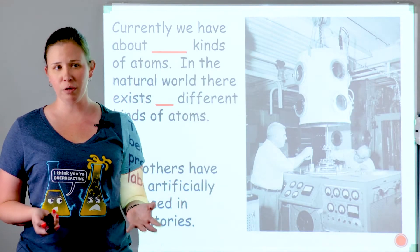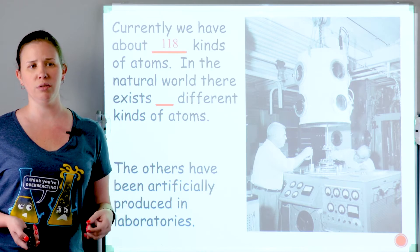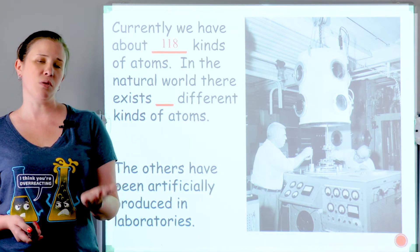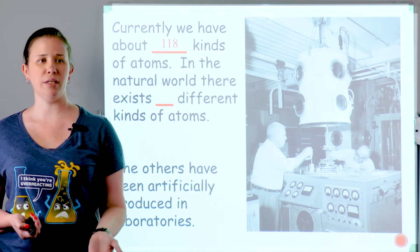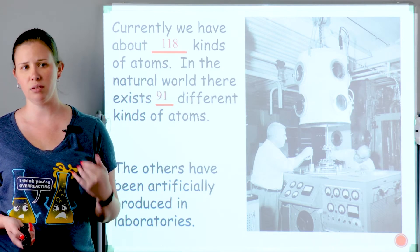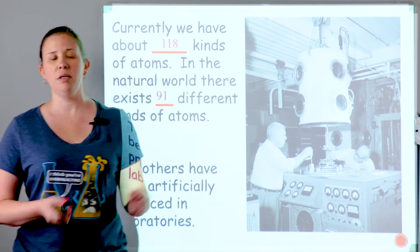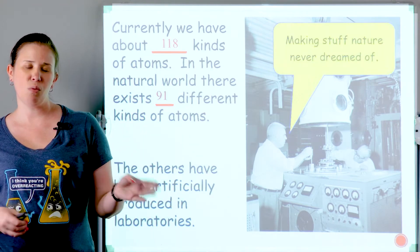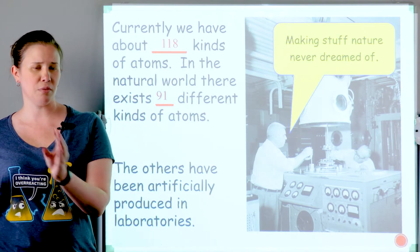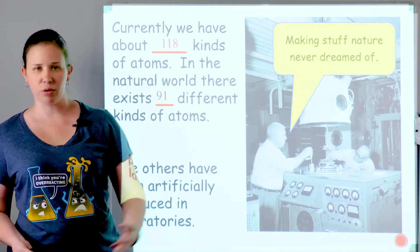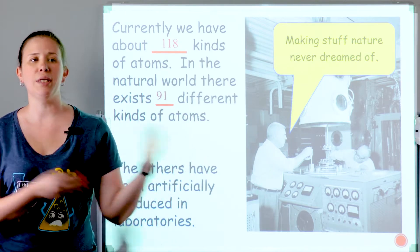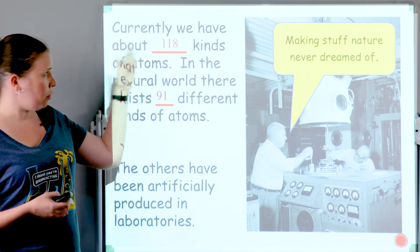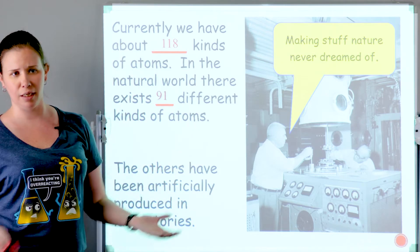The entire periodic table actually contains 118 different types of atoms, but only some of those occur naturally — only 91 of those things occur naturally. The other things are what we call synthetic, something that we've man-made, something we've produced using particle accelerators and similar technology in order to create these different types of elements. So we have 118 total different types, but only 91 naturally occurring.